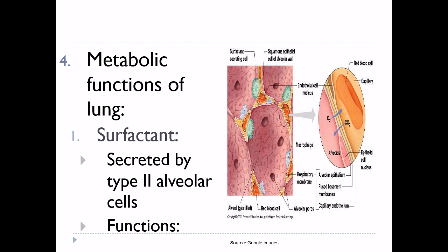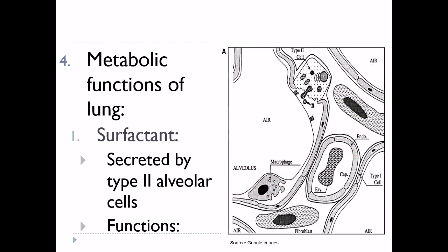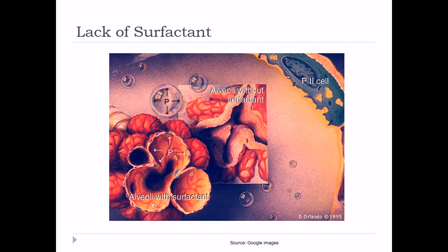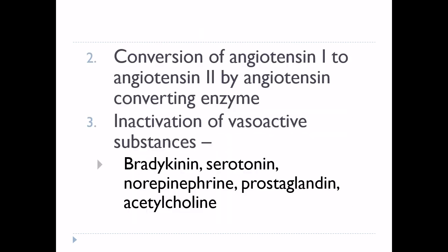Second metabolic function of the respiratory system: you can see here type 2 alveolar epithelial cells which secrete surfactant, and these surfactant-secreting cells help prevent collapse of alveoli — shown here as alveoli with surfactant versus without surfactant. The second metabolic function is conversion of angiotensin 1 to angiotensin 2 by angiotensin-converting enzyme, present on the surface of pulmonary capillary endothelial cells.